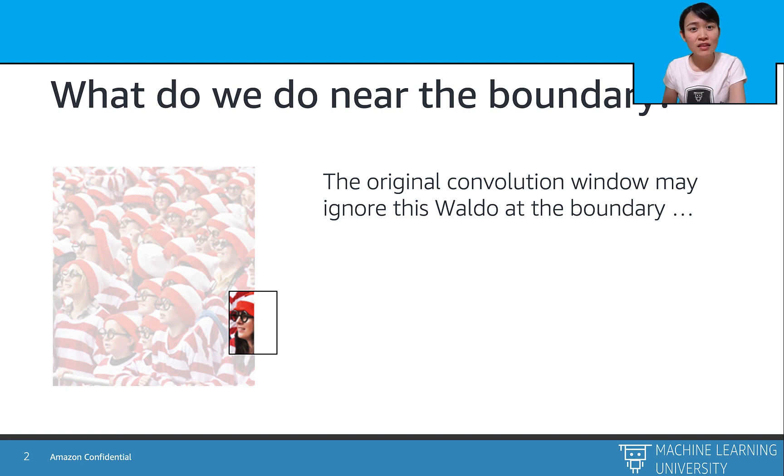Sometimes the boundaries of the original image have some interesting information, but the filter pays less attention to it. As you can see in this filter, the original convolution window may ignore this window at the boundary. Well, padding handles this issue.